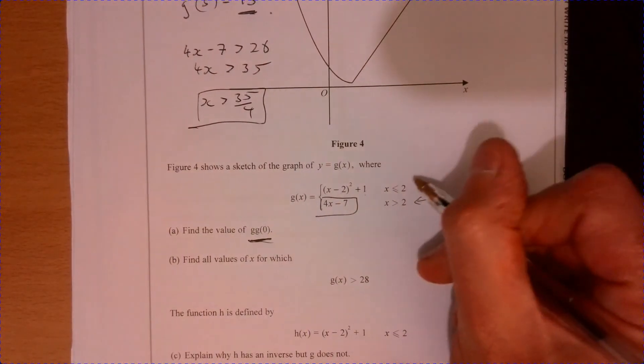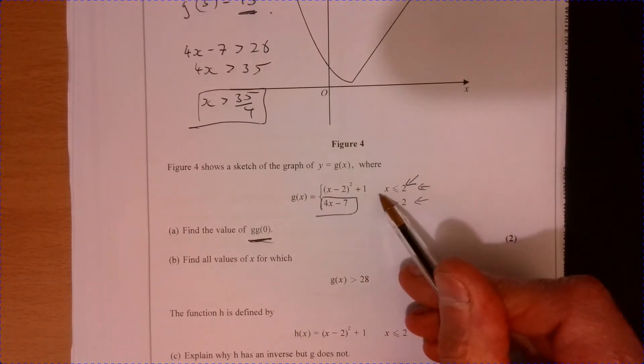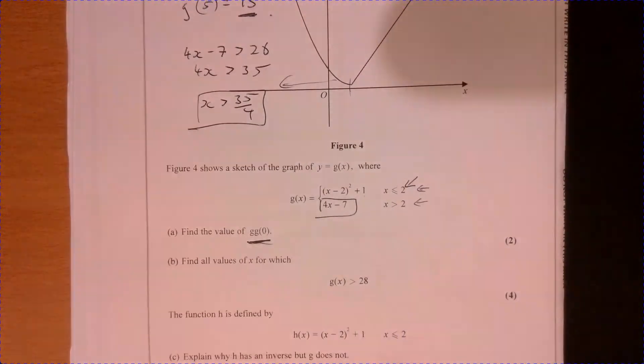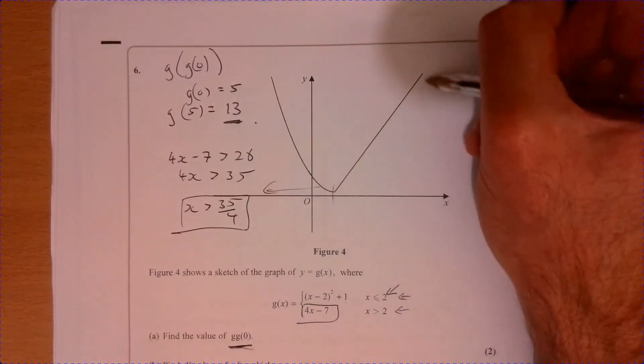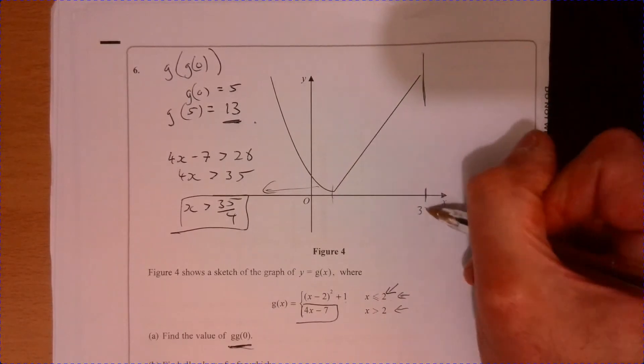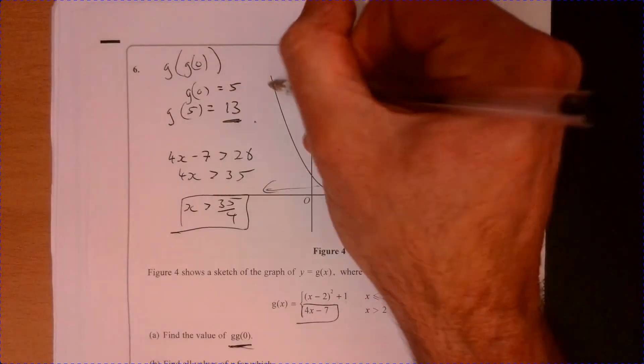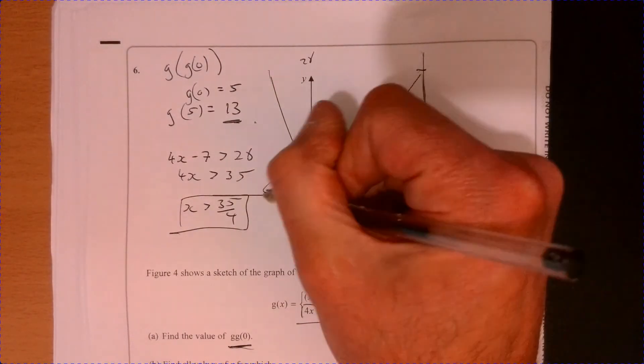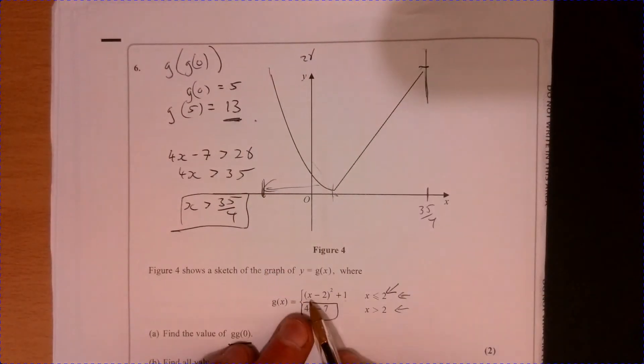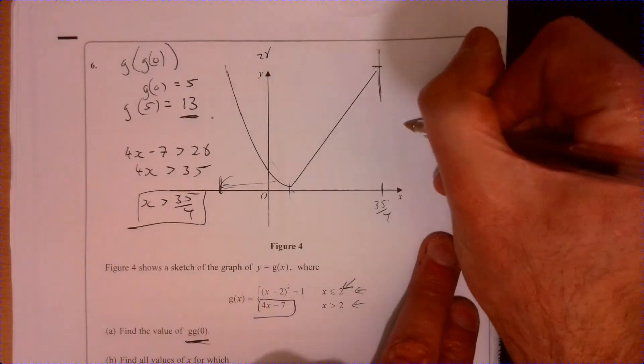Now the slightly harder one is actually thinking about this part when x is less than or equal to two. All right, so we're looking at this bit on this section here. So we've found the solution over here, imagine this 35 over four. So we found like 28 there. So now we're going to look at this part and try and work out this solution over here. It looks like it may well be a negative solution. So let's have a look at this here then. Let's give yourself a little bit of room to this one.